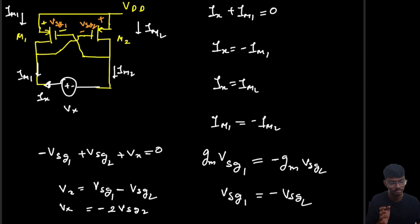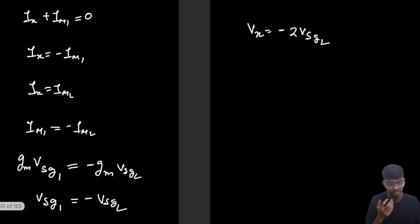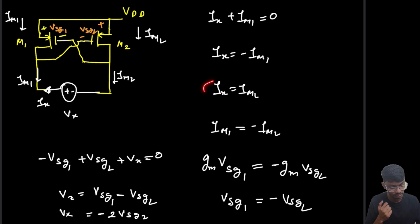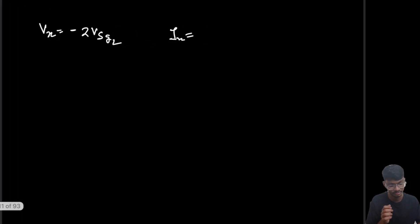Let's go to the next page. What is V_x? V_x is minus 2 V_SG2. And what is I_x? I_x is basically I_M2, and what is I_M2? I_M2 is gm V_SG2.